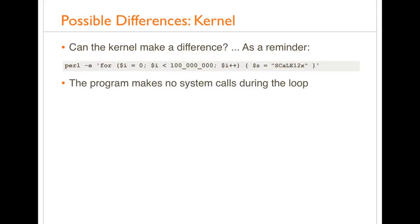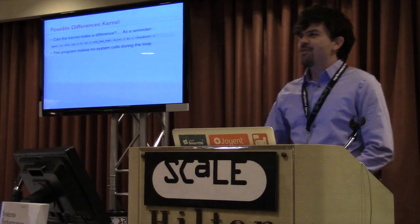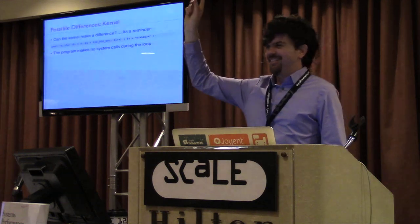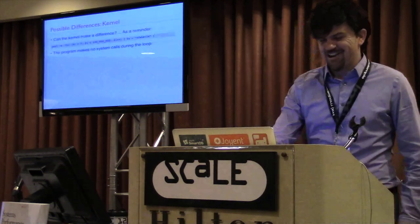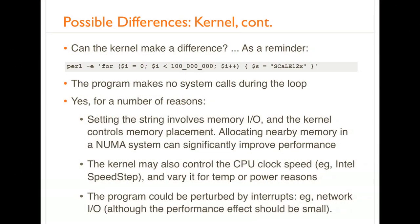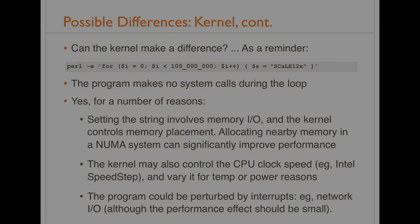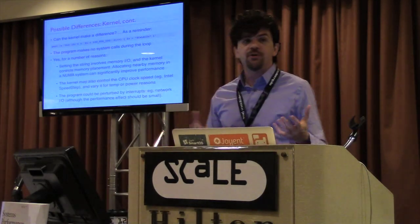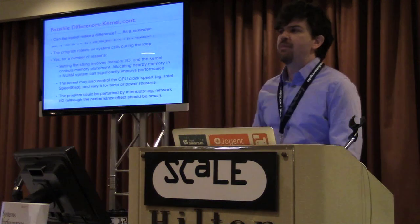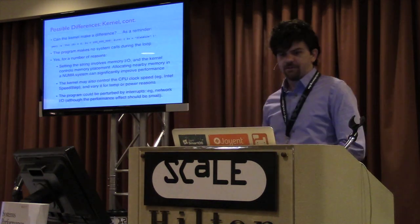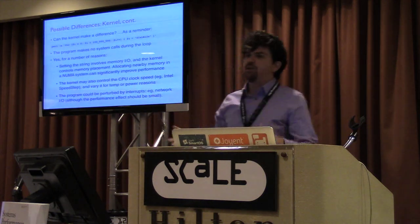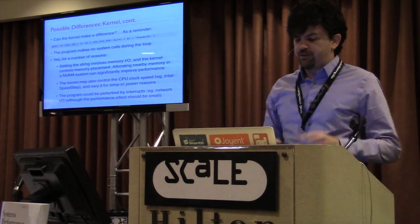Can the kernel make a difference for this really simple one-liner, even though the program makes no system calls during the loop? Absolutely. The setting of the string involves memory I/O, and the kernel controls memory placement. Allocating nearby memory significantly improves performance — there's a lot of performance work on both kernels about improving memory locality, memory groups, and memory domains. When you're hot on CPU you're actually doing memory stall cycles.